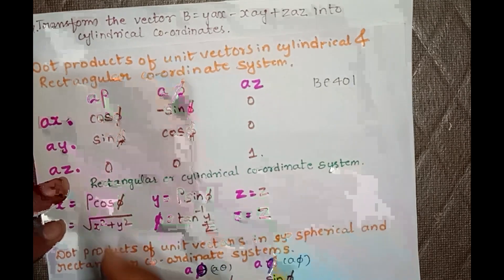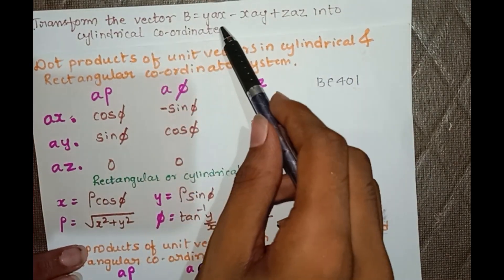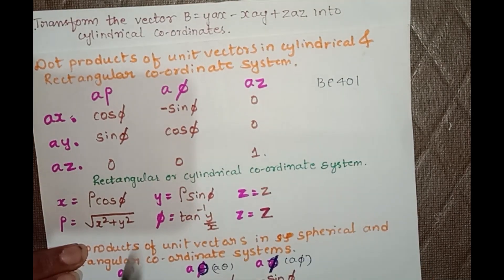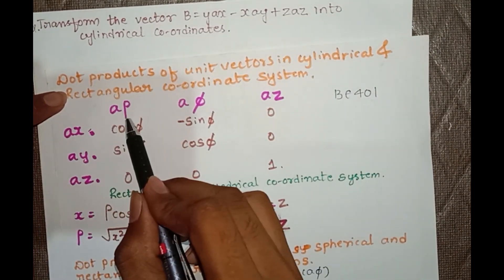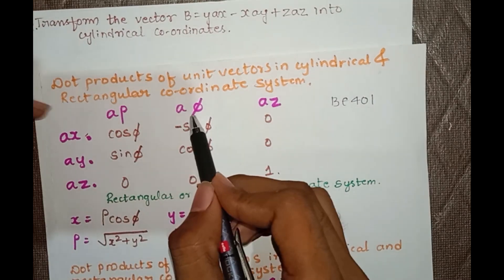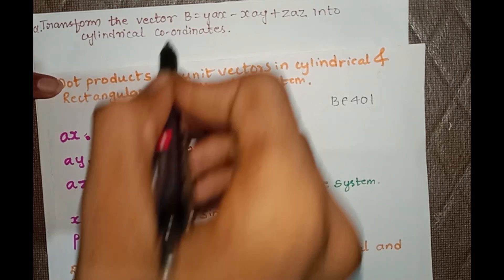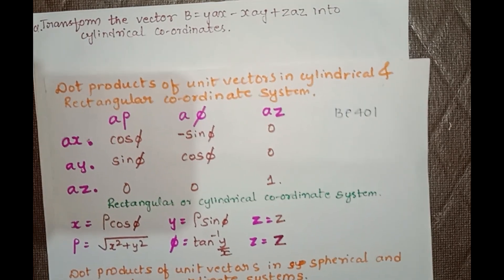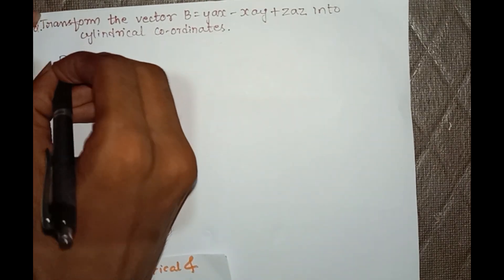Here we can see the formula which will be used. We have to use this table to convert the Cartesian coordinate system (x, y, z) into cylindrical coordinate system. First we have to deal with aρ — we convert vector B with respect to aρ, then with respect to aφ, and then with respect to az. These are the steps involved to solve this problem.